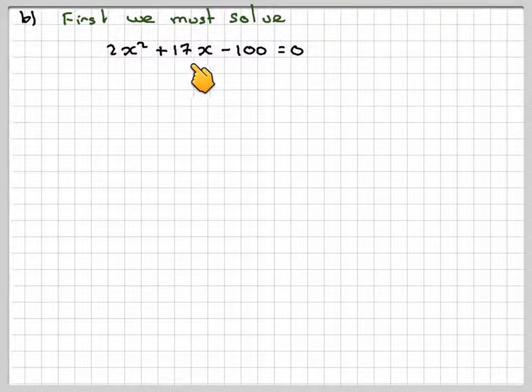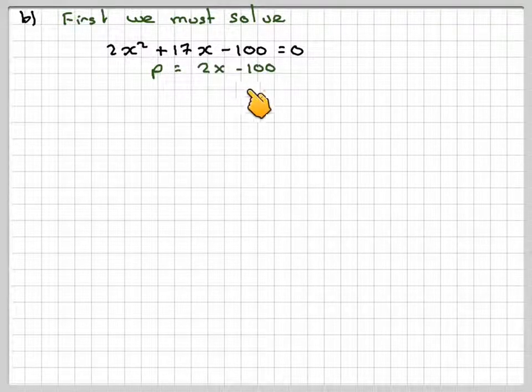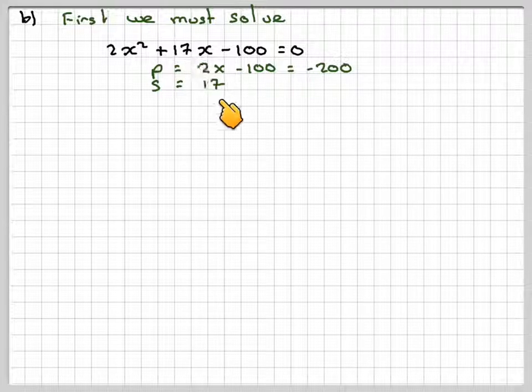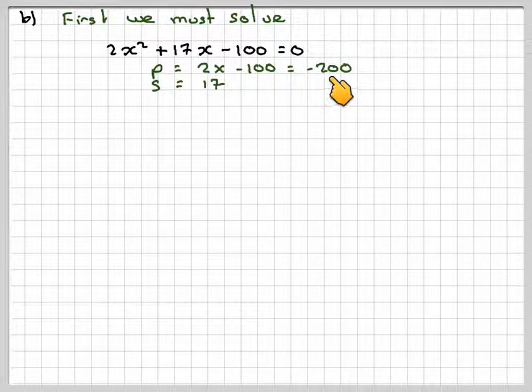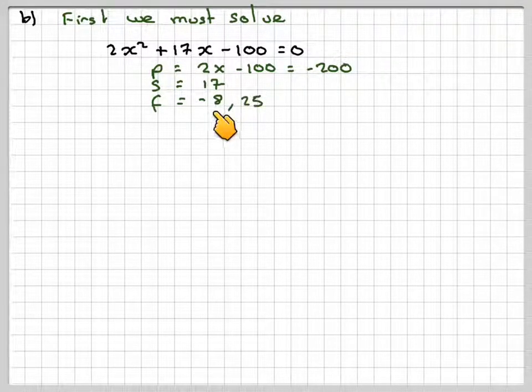It does factorise, but in the exam, if it doesn't factorise, use the quadratic formula. We're going to use factorisation. The product is 2 times minus 100, equal to minus 200, and the sum is 17. We want two numbers which multiply to minus 200 and add to 17. One must be positive, one must be negative. Eventually, we come up with minus 8 times 25. Minus 8 times 25 makes minus 200, minus 8 plus 25 makes 17.